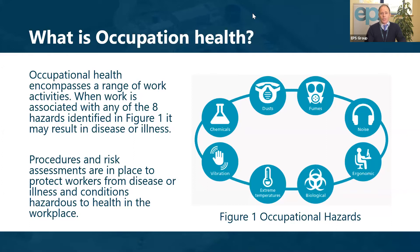So what is occupational health? What's it defined as? Occupational health encompasses a range of work activities and when work is associated with any of the eight hazards presented in the diagram, it may result in disease or illness. Procedures and risk assessments are put in place to protect workers from disease or illness and conditions hazardous to health in the workplace. Fumes is one of the eight hazards listed, and that's the one we're going to discuss this morning.